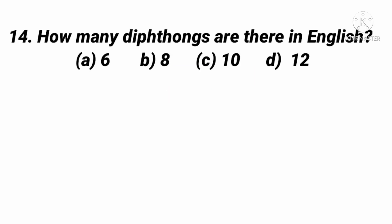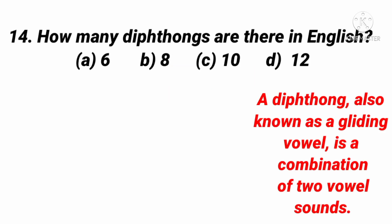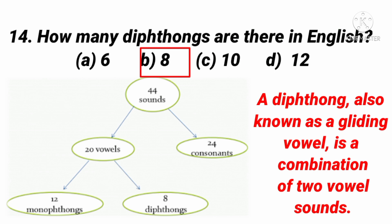The next question: How many diphthongs are there in English? The right answer is 8. A diphthong, also known as a gliding vowel, is a combination of two vowel sounds. Remember these key numbers: total sounds 44, consonants 24, vowels 20, monophthongs 12, diphthongs 8. These facts are commonly tested in exams.